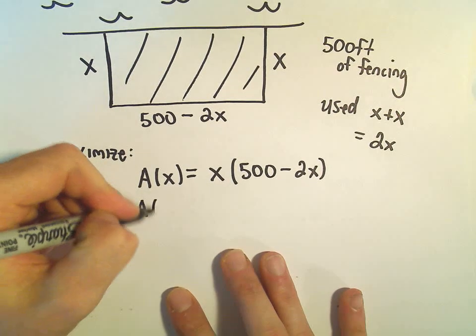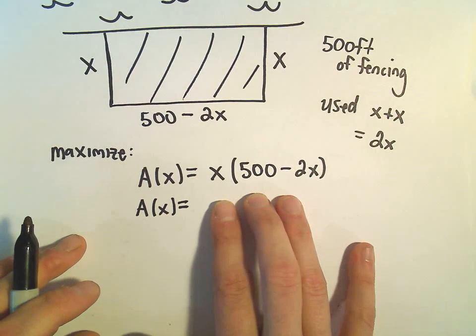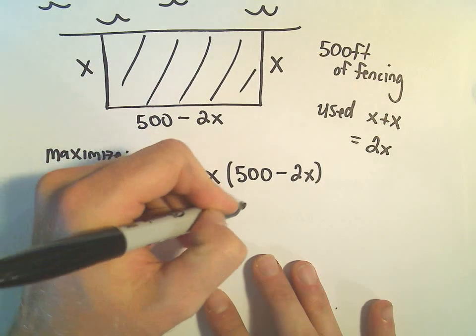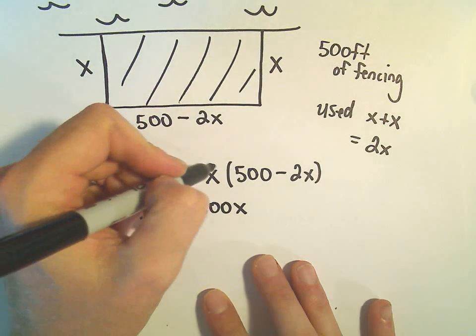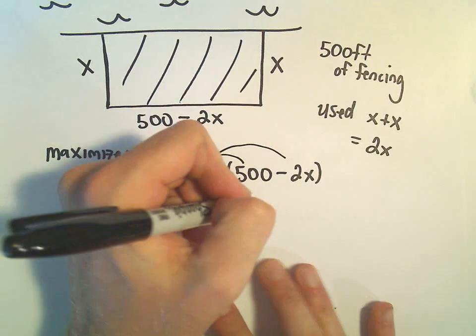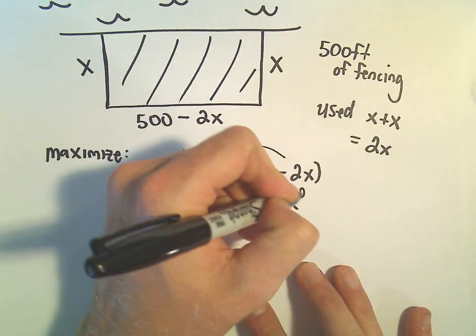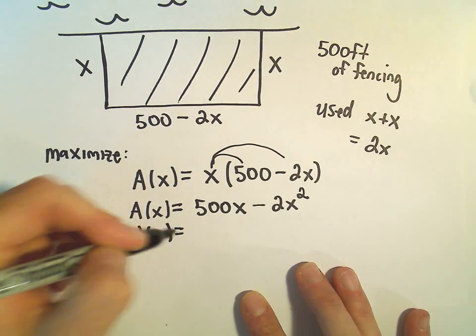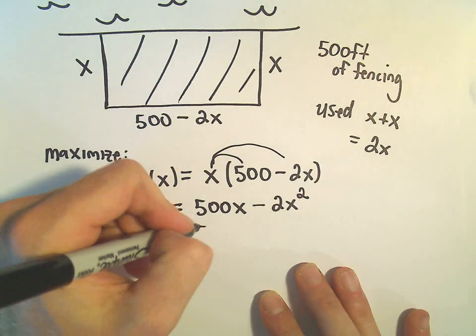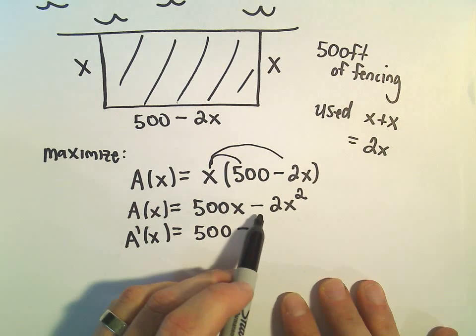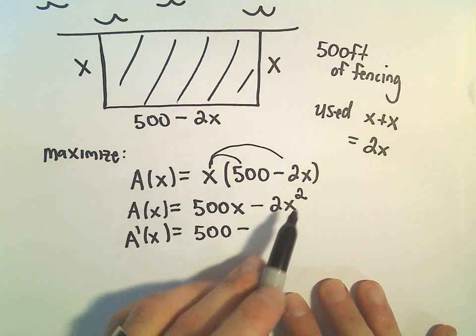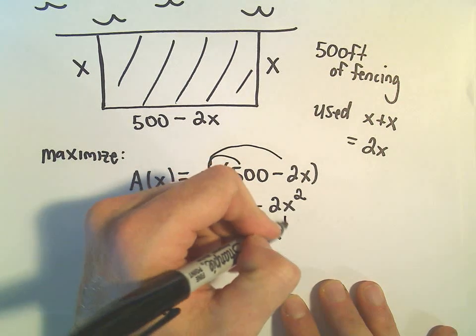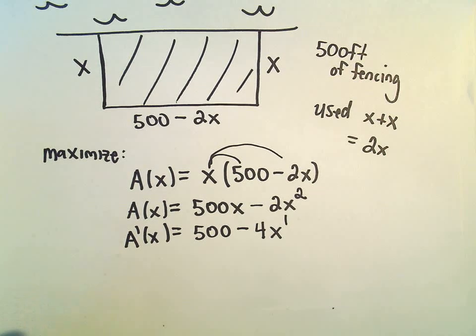Alright, well before I take the derivative, if we took the derivative immediately we would have to use the product rule and it wouldn't be that bad. But I'm going to multiply it out first. So we would have 500x when we distribute, and then we would have negative 2x times x, which is negative 2x squared. And now we can take the derivative without too much trouble. The derivative of 500x will just be 500. The derivative of negative 2x squared, well, the 2 would come out front and give us negative 4, and then we would take 1 away. So we would end up with 500 minus 4x.